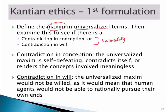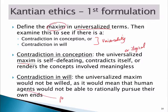This is how we work out whether something meets the universality test. A contradiction in conception occurs when the maxim doesn't make sense — it's self-defeating or illogical. For instance, if lying were okay, then truth would be meaningless, so the rule becomes illogical. A contradiction in will is slightly different: the maxim might not be illogical or self-defeating, but it would lead to a kind of world that people wouldn't want to live in. Those are the two tests — contradiction in conception or contradiction in will — and they are subsets of the universality test, the first formulation of the categorical imperative.